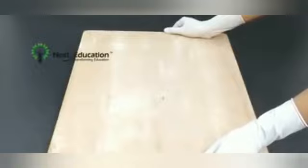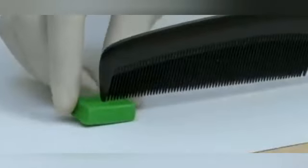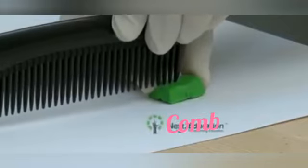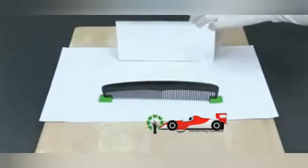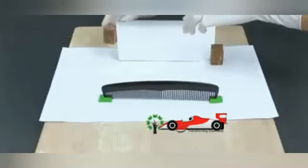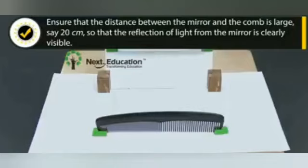Hi, children. Here is the activity. Let me take the drawing board and arrange the white sheet. We need the comb, torch light, and one plane mirror. Now we are going to fix the mirror using gum so it should stick and not move. Next, we are going to arrange the plane mirror — you can see the image of the comb. It should be a little bit large, maybe nearly 20 centimeters, so that the reflection of the light from the mirror is clearly visible.